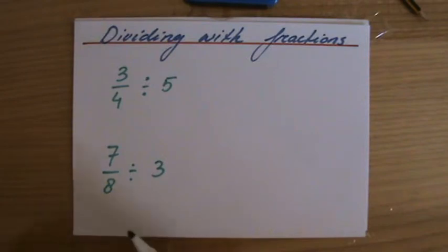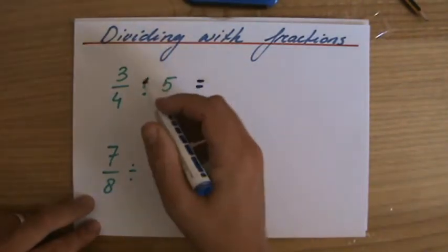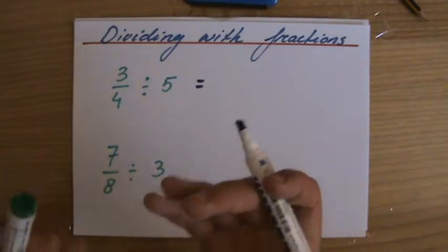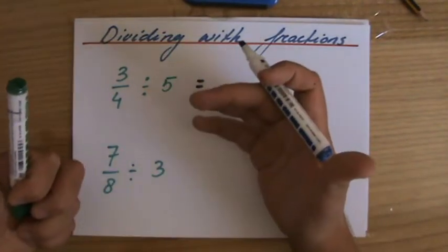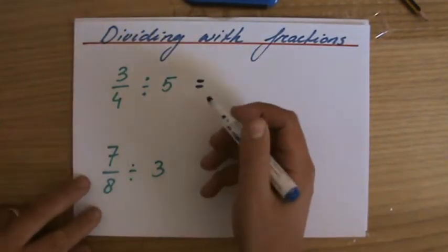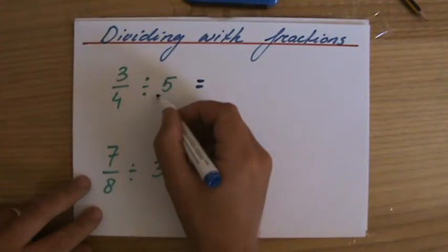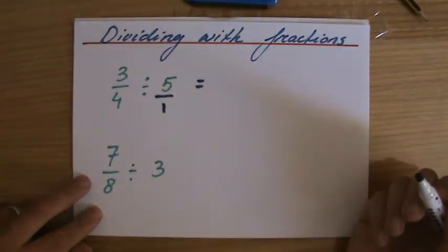What did we notice in the previous video? That when you're dividing with fractions, you want to do the multiplication of the reciprocal. Hang on a minute. 5 as a fraction is 5 over 1. Do you agree?